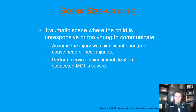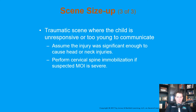A young child that is either unresponsive or too young to communicate makes assessing a traumatic mechanism harder. Whenever they're unresponsive or too young to communicate, we can assume the injury was significant enough to cause head or neck injuries. Always consider C-spine immobilization as appropriate. Know that you won't be able to put them on a full backboard with adult-sized straps. Make sure you have an appropriately-sized C-collar and all the equipment you need, and that comes from your scene size-up.